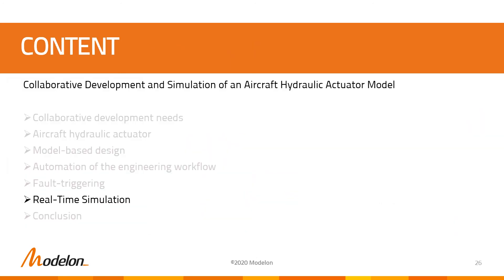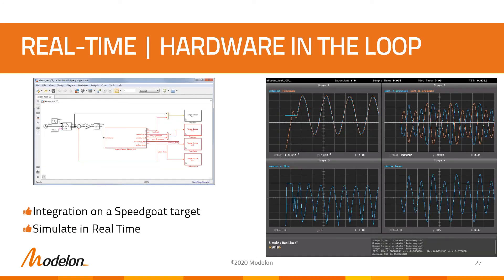We will now present how our model meets the hard real-time simulation constraints with a concrete example. In the verification phase of a development, the engineers might want to couple the model with a more detailed controller functioning in real-time. Here, the model is exported as an FMU and integrated into Simulink, where the controller is built. We actually didn't need a more complex controller to illustrate our experiment, so the same is used. The system is then built on a SpeedGoat target and simulated in real-time.